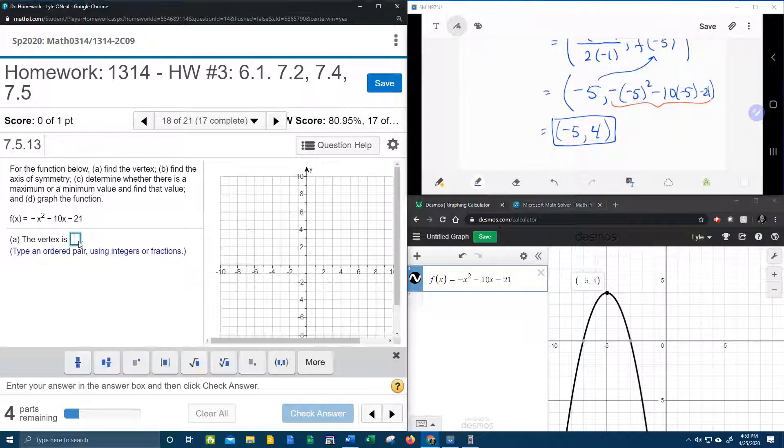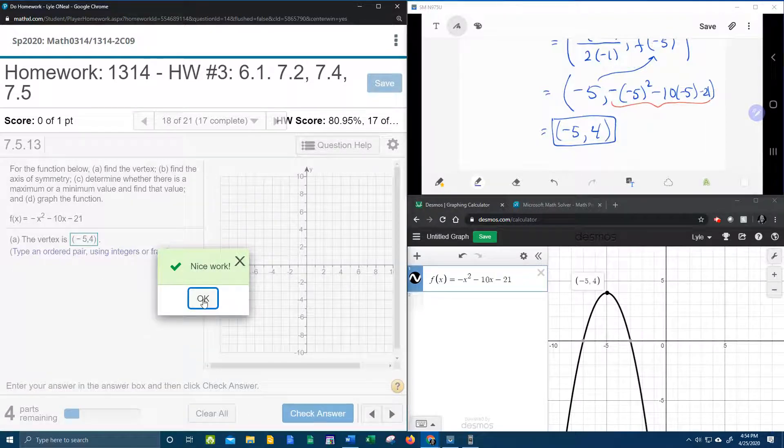And so let's input that into our MyMathLab and see if that's right. As an ordered pair, negative 5 comma 4, enter. Bam, nice.